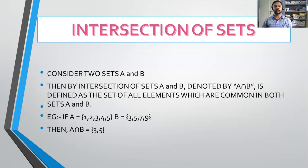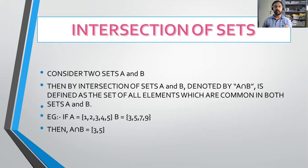Intersection of sets — the next operation. Consider two sets A and B. The intersection of sets A and B is denoted by A intersection B — using an inverted U symbol. It is defined as the set of all elements which are common in both A and B. For example, if A equals {1, 2, 3, 4, 5} and B equals {3, 5, 7, 9}, then A intersection B contains the common elements: three and five. Therefore A intersection B equals the set {3, 5}.